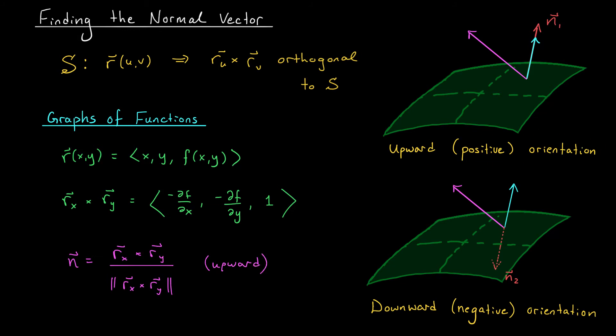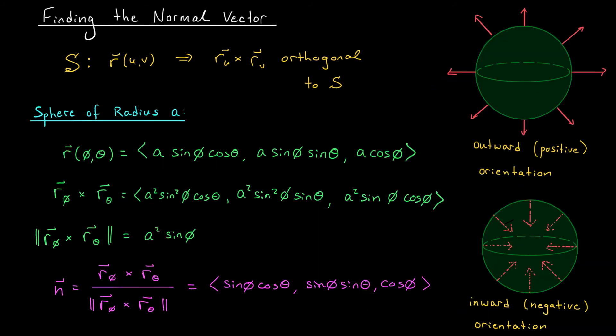If instead we want the normal vector going the other way, well, then we can multiply our result by minus 1. We call this downward or negative orientation.